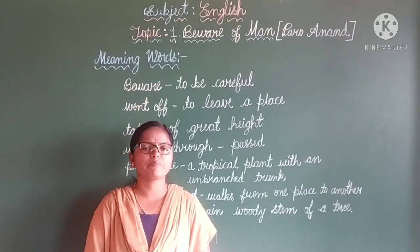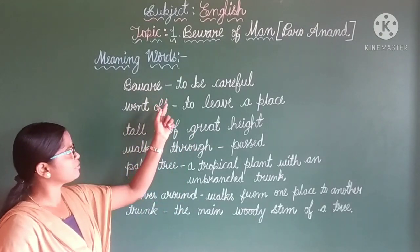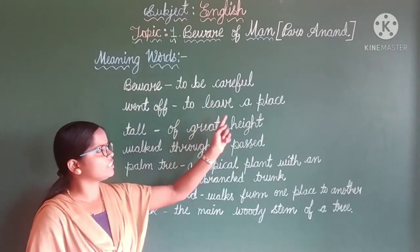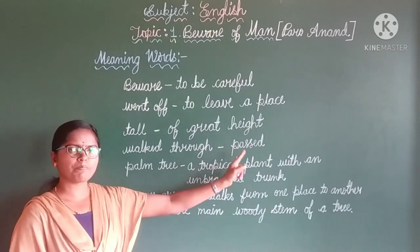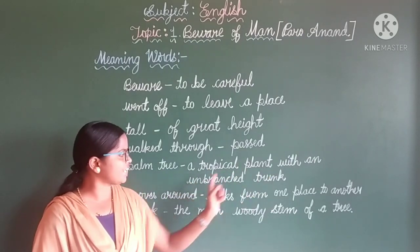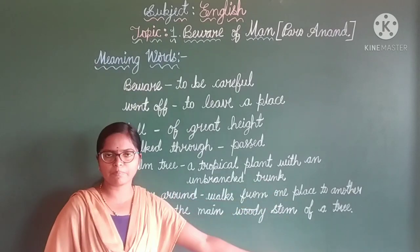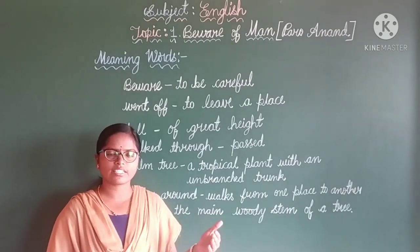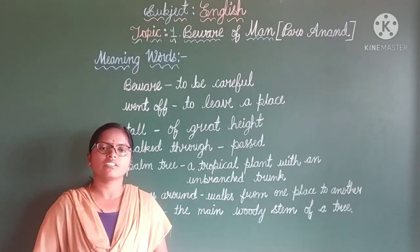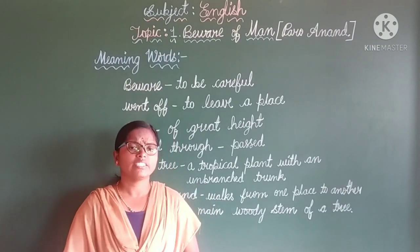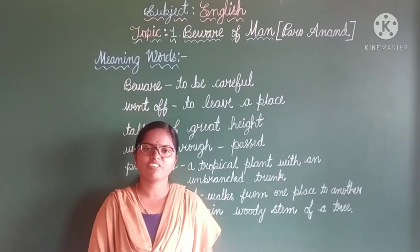Dear children, practice all these vocabulary words. 'Beware' means to be careful. 'Went off' means to leave a place. 'Tall' means of a great height. 'Walk through' means passed. 'Palm tree' means a tropical plant with an unbranched trunk. 'Moves around' means to walk from one place to another. 'Trunk' means the main woody stem of a tree. You can practice these meanings and read the story.